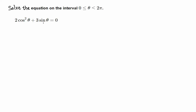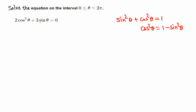We have two types of trig functions, so we need to convert to only one type. The relationship between sine and cosine is sine squared plus cosine squared equals 1. It's easier to change cosine squared into sine: cosine squared equals 1 minus sine squared. So we rewrite the equation as 2 times (1 minus sine squared theta) plus 3 sine theta equals 0.